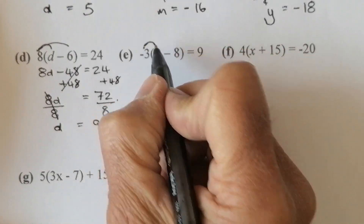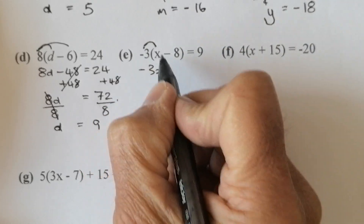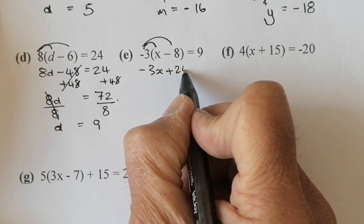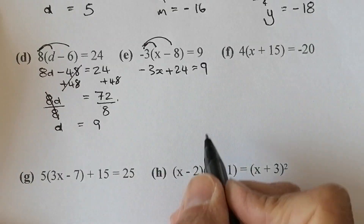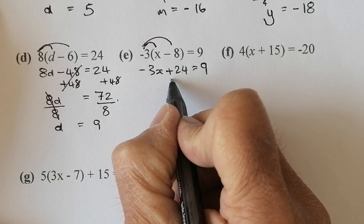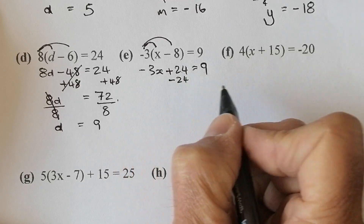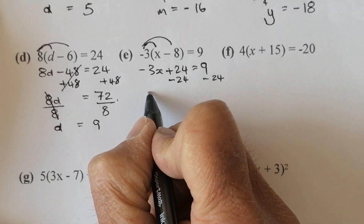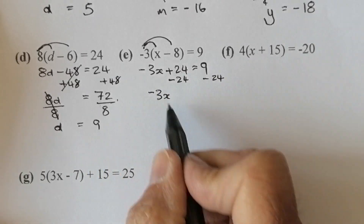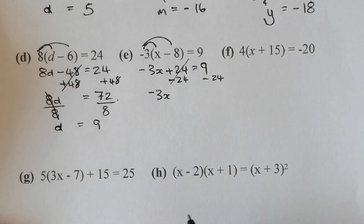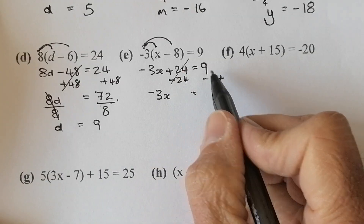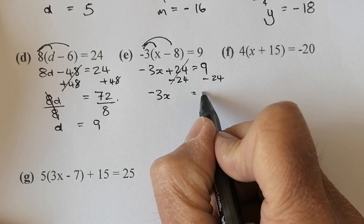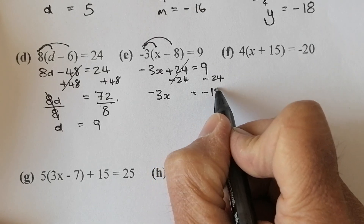A negative sign multiplier again. So I've got minus 3x. Minus 3 times minus 8 gives me a positive 24, which leaves me with 9 on that side that I haven't touched yet. I'm going to get rid of that 24 by subtracting 24 from it — if I do that on the left, I must do the same on the right-hand side. This side leaves me with minus 3x, and I've got 9 take away 24 on the right, which gives me minus 15.